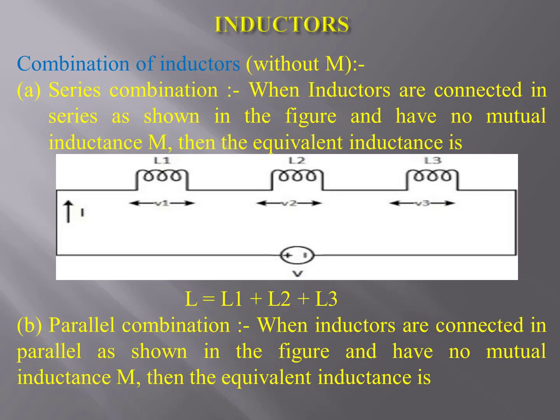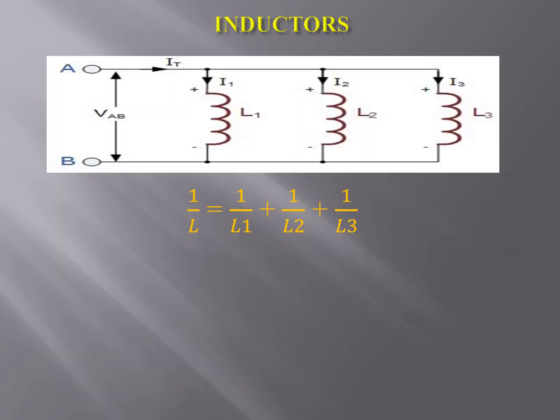Inductors can also be connected in series and parallel, similar to resistors and capacitors. For a series combination — you can see the figure on the screen — when inductors are connected in series with no mutual inductance, the equivalent inductance can be found by the equation shown on the screen. For a parallel combination, when inductors are connected in parallel with no mutual inductance, the equivalent inductance can be found by the following equation shown on the screen.